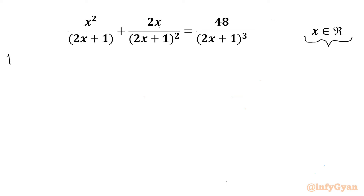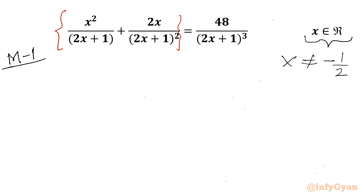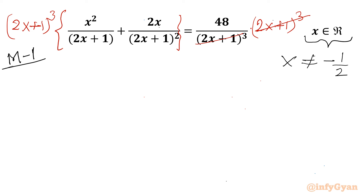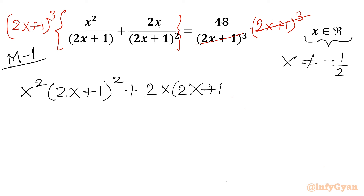I will share two different approaches to solve this question. Method number 1: we begin by noting x cannot equal negative one-half, as the denominator cannot be 0. Now I will multiply both sides of this equation by (2x+1)³ and cancel terms, giving us x²(2x+1)² + 2x(2x+1) = 48.